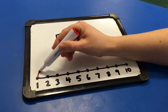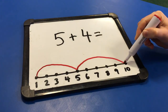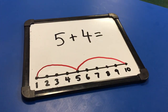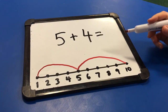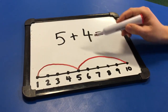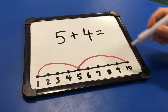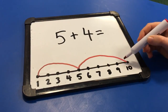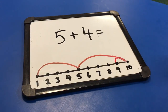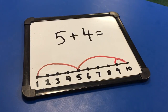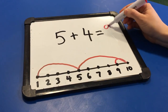I know that five and another five makes ten, because double five is ten. But I also know that four is one less than five. So if five plus five is ten, then one less for my four would make it nine. So five plus four equals nine.